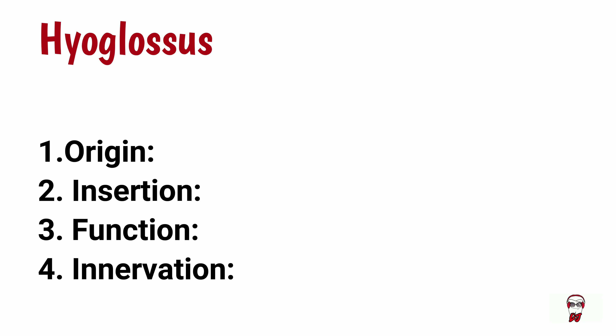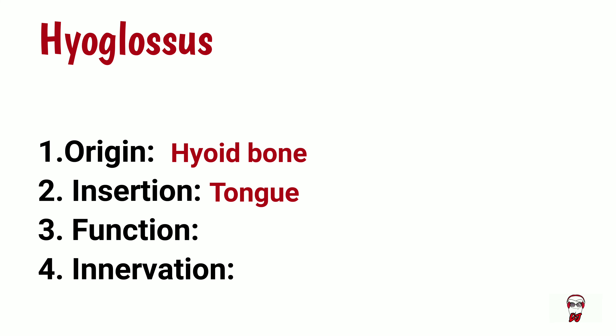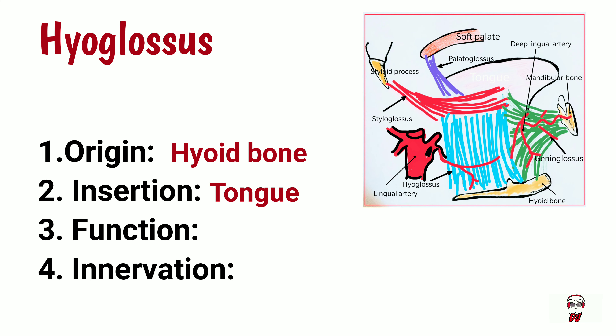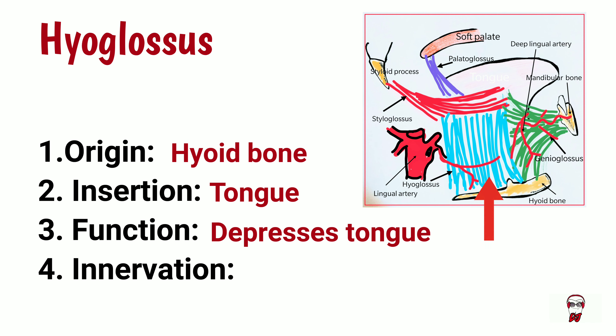Let's start with the hyoglossus muscle. It originates from the hyoid bone and it inserts into the side of the tongue. The muscle is located below the tongue and functions to depress the tongue. It is innervated by the hypoglossal nerve.